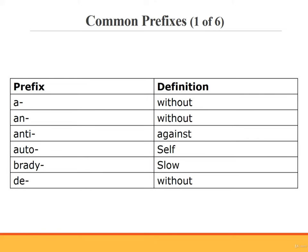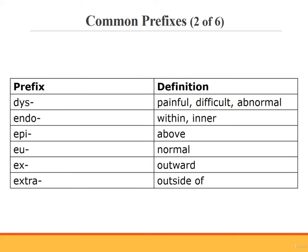For this first slide, I'll read out the prefix and its corresponding definition. On subsequent slides, I'll just read out the prefix so you can focus on its pronunciation. A (or ah) means without. An means without. Anti (or anti) means against. Auto means self. Brady means slow. De means without. Dys means painful, difficult, or abnormal.